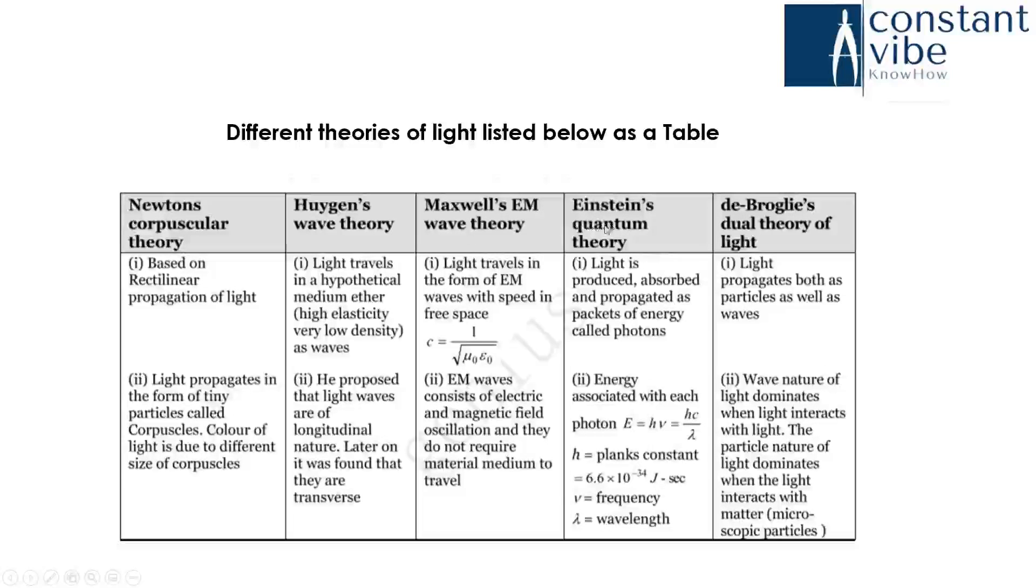Einstein's quantum theory explains light is produced, absorbed and propagated as packets of energy called photons. Here one formula is for this expression: E is equal to hc by lambda, where h is the Planck's constant. That is 6.6 times 10 to the power of minus 34 joules per second. V is frequency and lambda is wavelength.